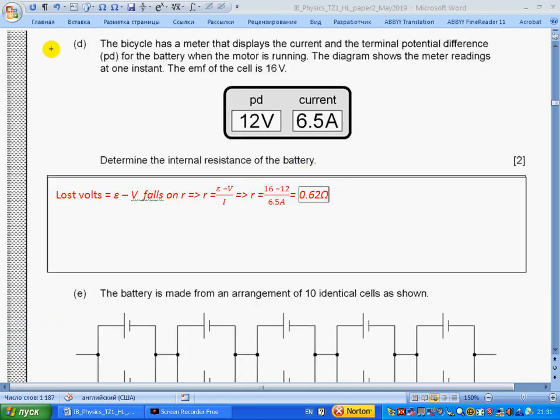Part d: The bicycle has a meter that displays the current and the terminal potential difference for the battery when the motor is running. The diagram shows the meter reading at one instance. The emf of the cell is 16 volts. Part i: Determine the internal resistor of the battery. 12 volts is terminal potential difference, which means that out of 16 volts of emf, 4 volts falls on internal resistance and 12 volts falls on external resistance. Current in both are the same, 6.5 amperes, because they're connected in series. This is called lost volts—it is voltage on internal resistance: emf minus terminal potential difference. Resistance will be lost volts by current, so we get 4 volts by 6.5, which is 0.62 ohms.